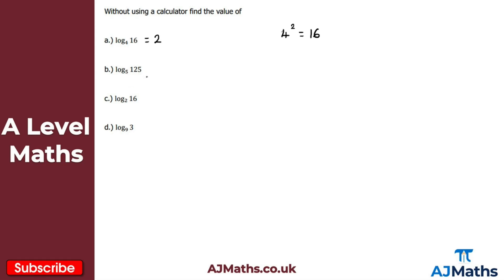Next, log 125 base 5 — what must the power of 5 be to give me 125? That's 5 cubed, which gives us 125. So log 125 base 5 equals 3. Then log 16 base 2 — what must the power of 2 be to give me 16? That's 2 to the power of 4, so log 16 base 2 equals 4.